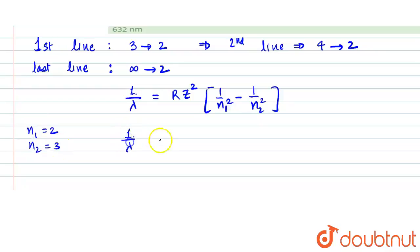So that would become 1/λ = Rz²[1/4 - 1/9], which is also equals to Rz² times 5/36.